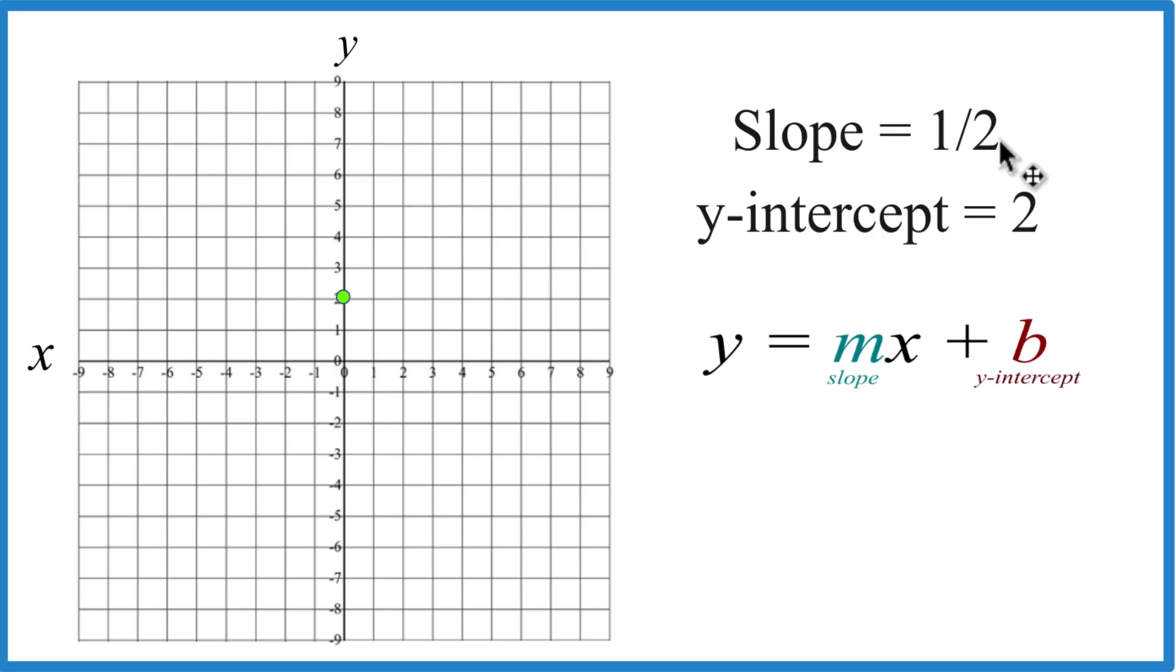Then the slope is one-half. You can think of that as rise over run. So we're going to go to our y-intercept, rise one, run two. We go up one from there, go over two, and you can see the line.